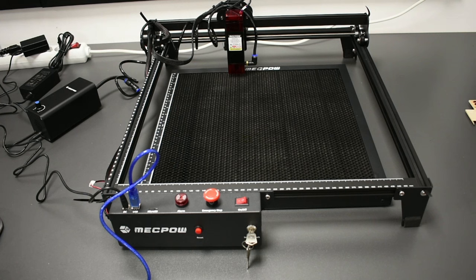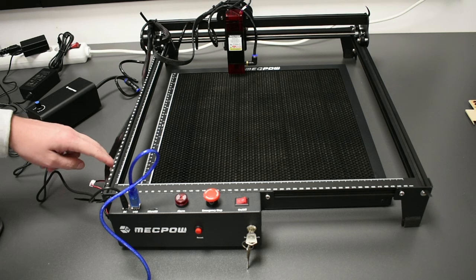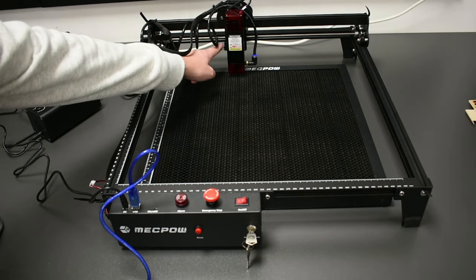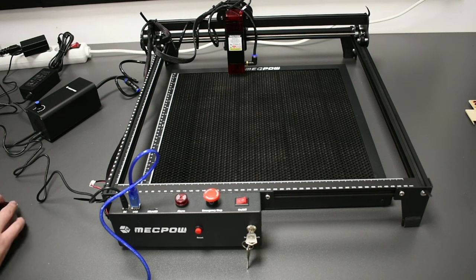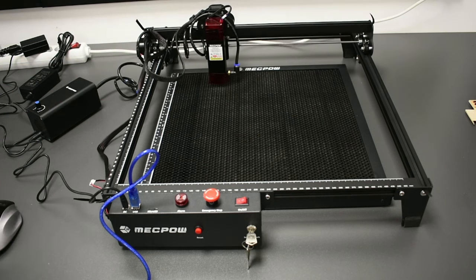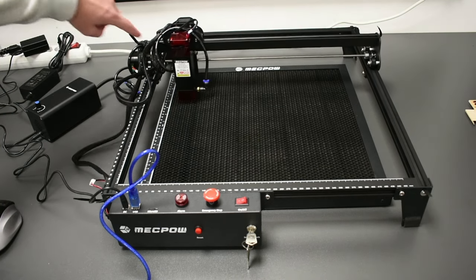So as I told, there are limit switches, one of them is here for the Y axis, and the other one is here next to the head on the X axis, and whenever you connect to Lightburn, it is automatically homing itself, first X axis then Y.